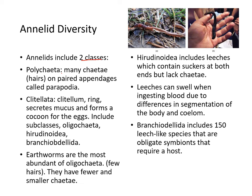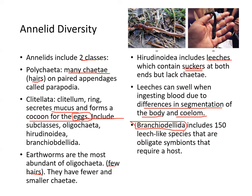Annelids include two classes: those with many chaetae or hairs, some of which have rings that secrete mucus and form a cocoon for the eggs; and earthworms, the most abundant among those with fewer hairs. Leeches contain suckers at both ends and can swell due to the difference in segmentation between the body and body cavity. There are also 150 leech-like species that are obligate symbionts requiring a host.